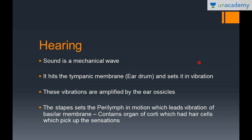Moving on to hearing. Hearing is a little more difficult to understand than vision because sound is a mechanical wave. It hits the tympanic membrane, sets up a vibration, and these vibrations are amplified by the ossicles. Sound is transmitted in the form of mechanical waves, which are translated into vibrations by the conducting system of the ear. These vibrations are perceived by the cochlea — specifically the organ of Corti — and the sensations are transmitted to the brain as impulses, which the brain interprets as sound.